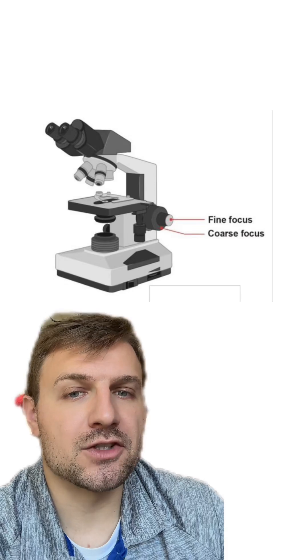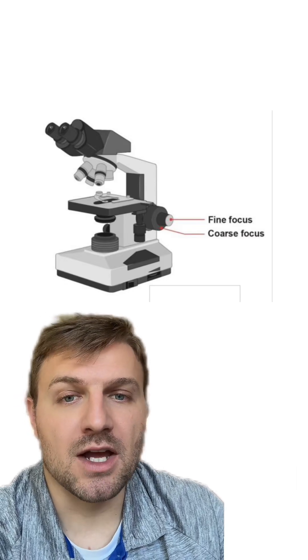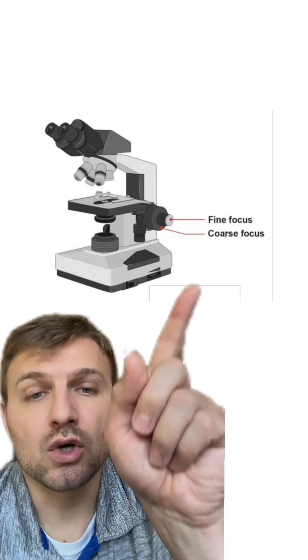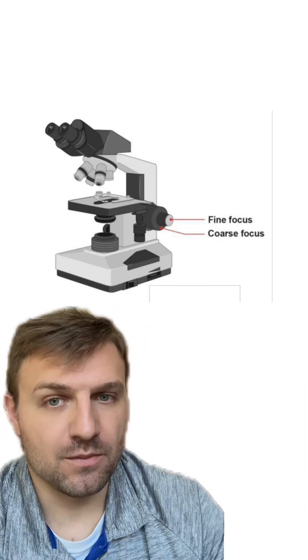Now, something to remember is some microscopes might have the coarse and fine adjustment knobs as one total knob. The coarse adjustment knob, in this case, will just be the larger of the two.